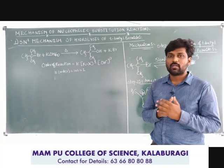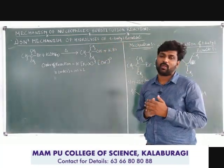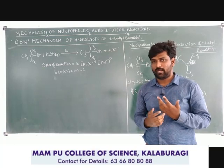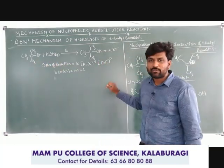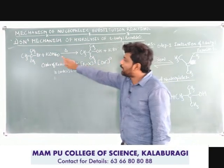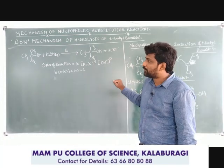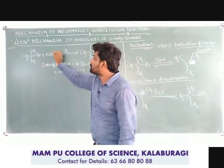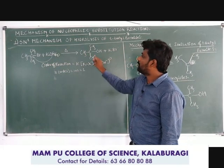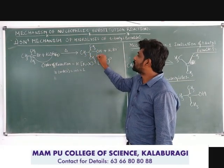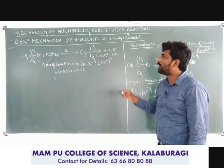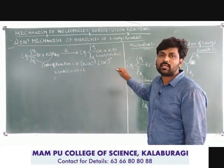For SN1 mechanism, the hydrolysis of tertiary butyl bromide means taking tertiary butyl bromide — a halogen bonded to a tertiary carbon atom — and heating it with aqueous potassium hydroxide. The OH⁻ attacks the tertiary carbon atom to which the halogen is bonded; Br is replaced by OH, giving the product tertiary butyl alcohol. The byproduct is KBr.